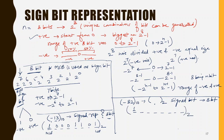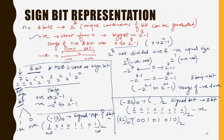For 82, we convert it into binary: 64 is required, 32 is not required, 16 is required — so 64+16=80 — then 2 is required, giving 82. So this is the binary conversion of minus 82. If we compare with the normal representation of 82, it would be 0 1 0 1 0 0 1 0. This is normal 82, and this is minus 82 — the only difference is in the sign bit.